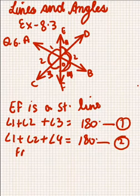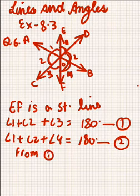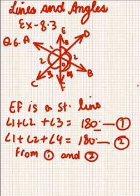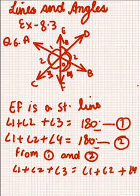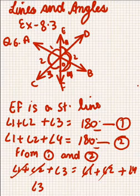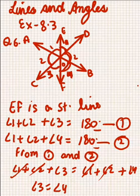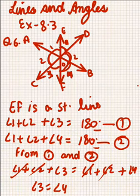From equations 1 and 2, since the right-hand sides are equal, the left-hand sides are also equal: angle 1 plus angle 2 plus angle 3 equals angle 1 plus angle 2 plus angle 4. Cancelling angle 1 and angle 2 from both sides, we get angle 3 equals angle 4. This proves that the ray opposite to the bisector of one of the angles bisects the vertically opposite angles.